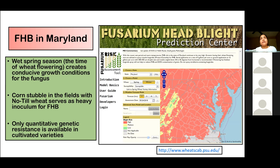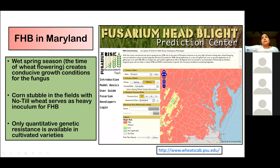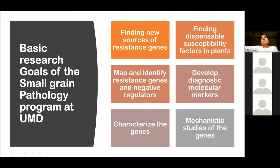This map shows Maryland and Delaware FHB risk during May 2018. One of my job responsibilities is to advise farmers about risks of Fusarium head blight due to weather conditions in a particular year, and to provide live commentaries to every region of Maryland to help farmers manage it effectively. I'll now talk about the various pieces I'm integrating to effectively manage Fusarium head blight.